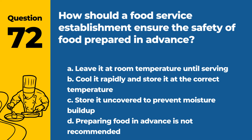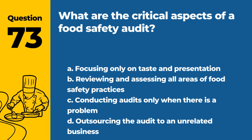Question 72. How should a food service establishment ensure the safety of food prepared in advance? a. Leave it at room temperature until serving. b. Cool it rapidly and store it at the correct temperature. c. Store it uncovered to prevent moisture buildup. d. Preparing food in advance is not recommended. Answer: b. Cool it rapidly and store it at the correct temperature. This is key for maintaining the safety of food prepared in advance.